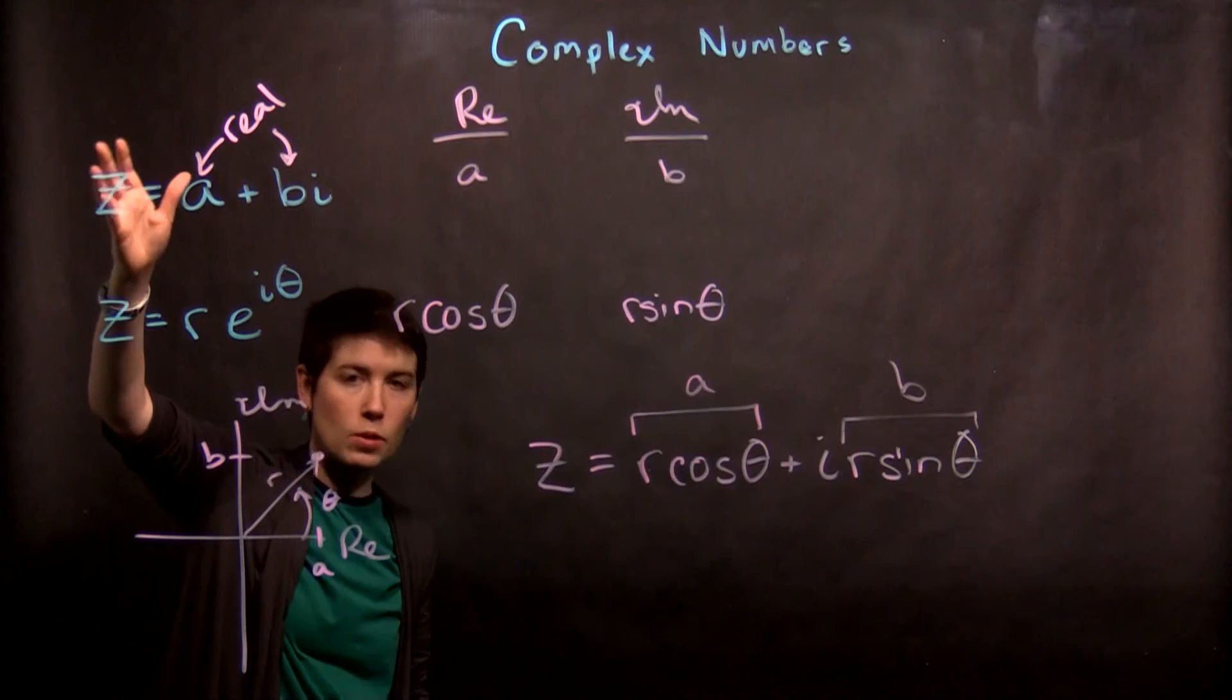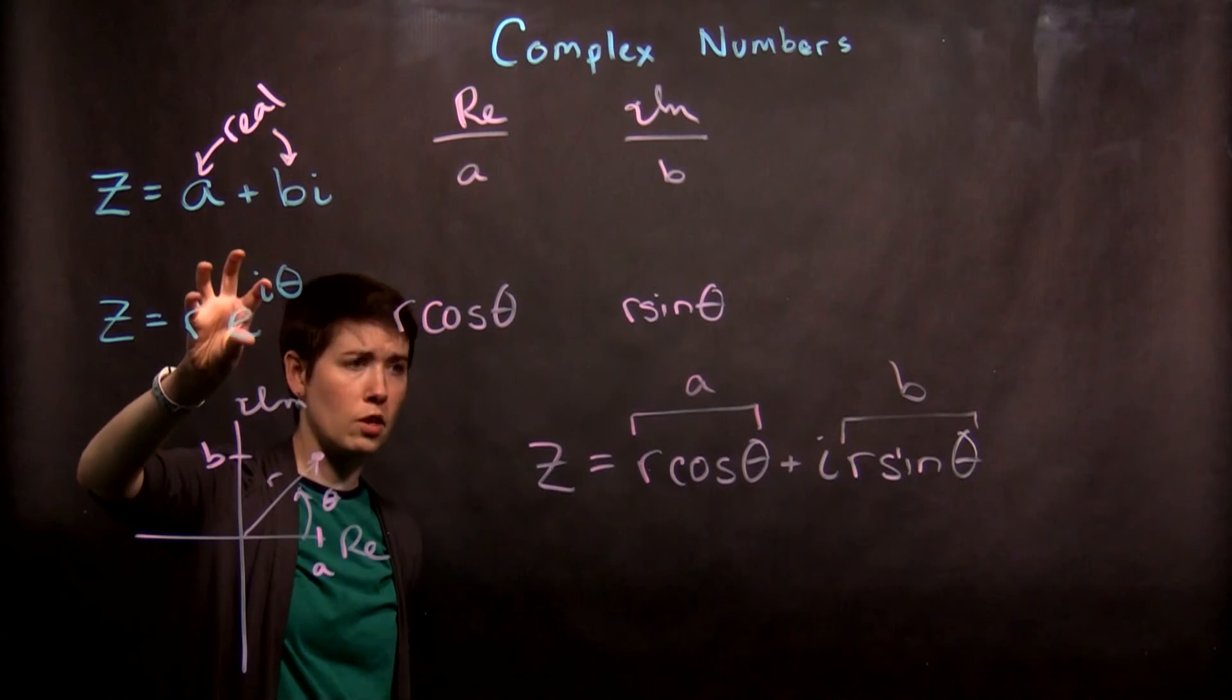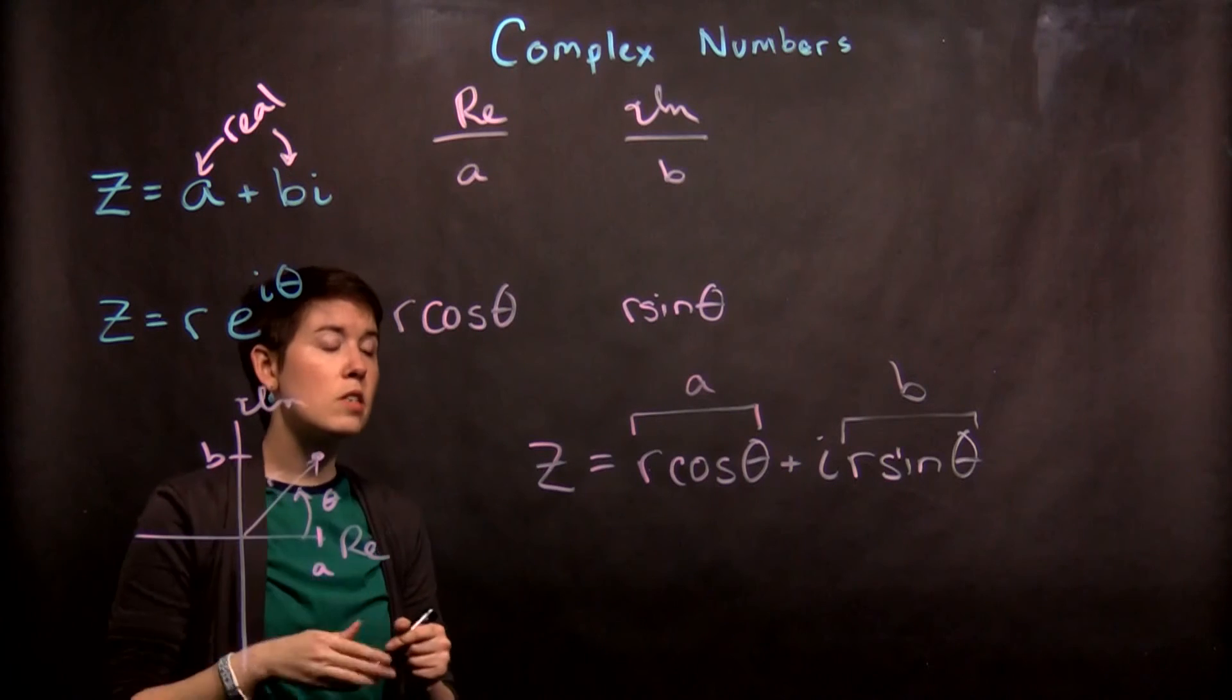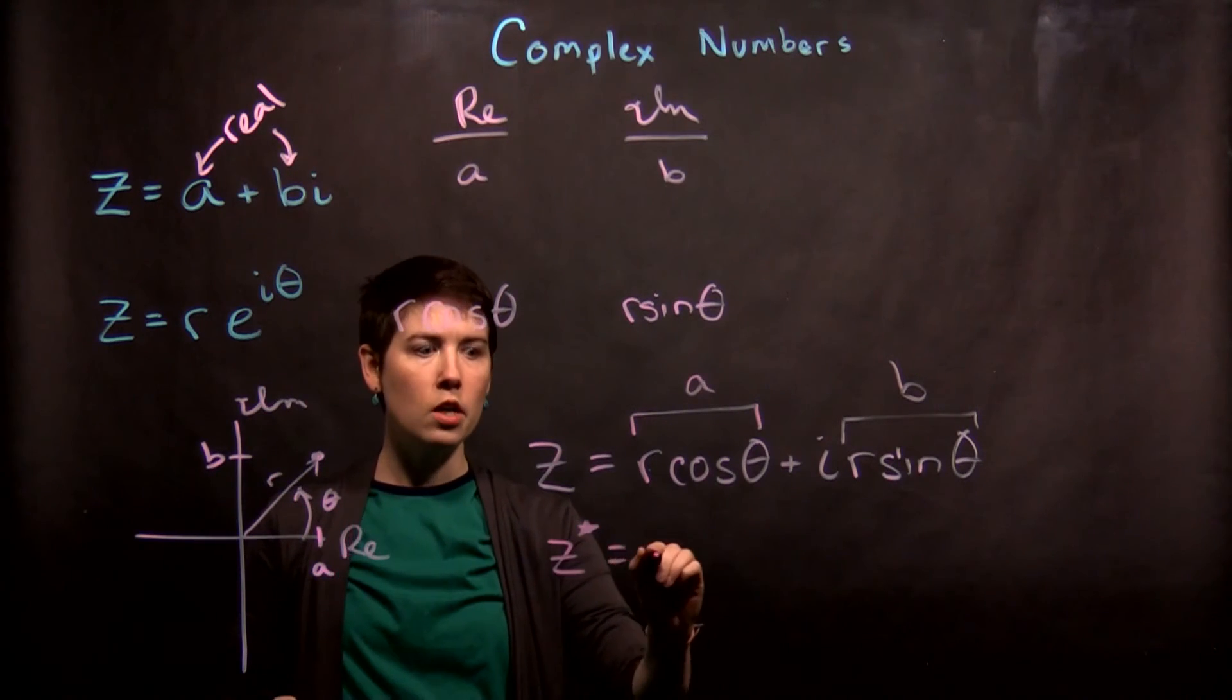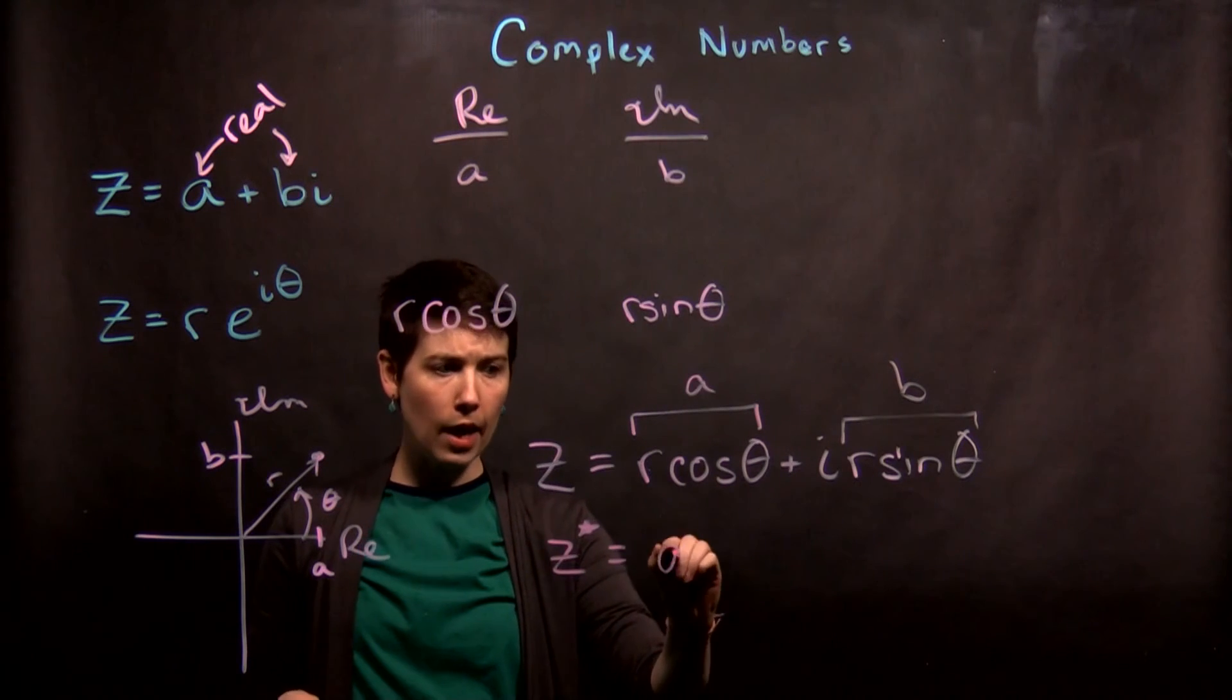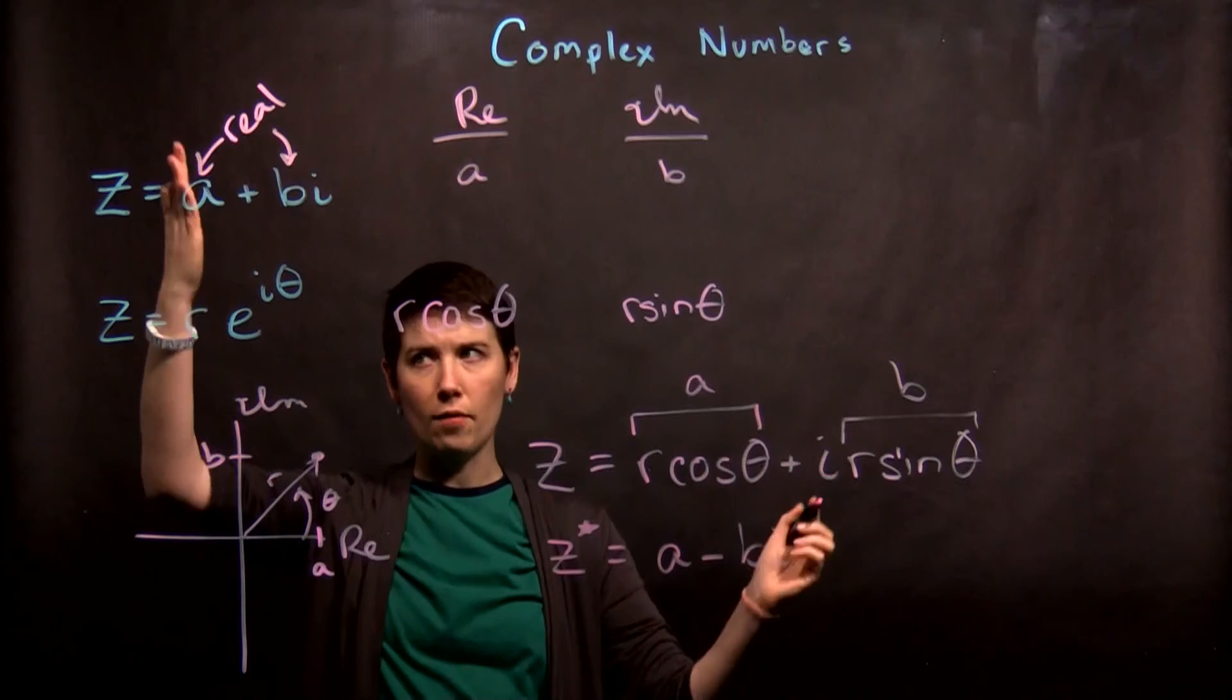Now this one might be more familiar, you might be more comfortable with it, this one's actually better for working with complex conjugates. Because if we want to have the complex conjugate of z, so z star, that would be a minus b i, then when we're multiplying it out we have a bunch of stuff.